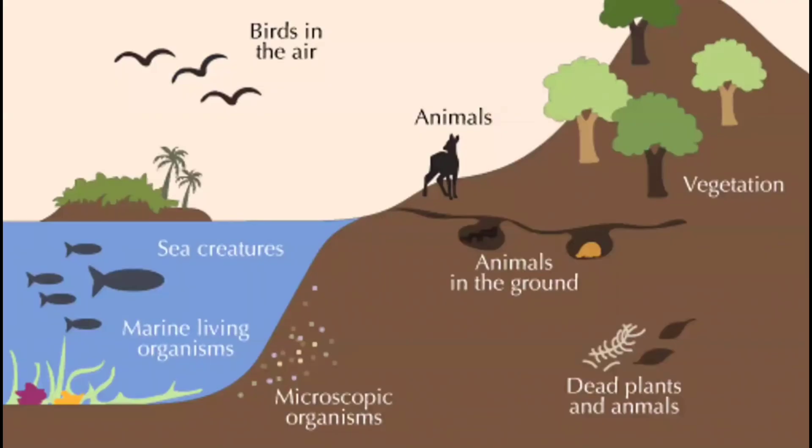The last system is the biosphere. From the Greek word bios, which means life, it contains all living organisms on Earth. Living beings can be found in all parts of the Earth, from areas comprising terrestrial, marine, and coastal ecosystems, to places where you don't imagine life would exist.